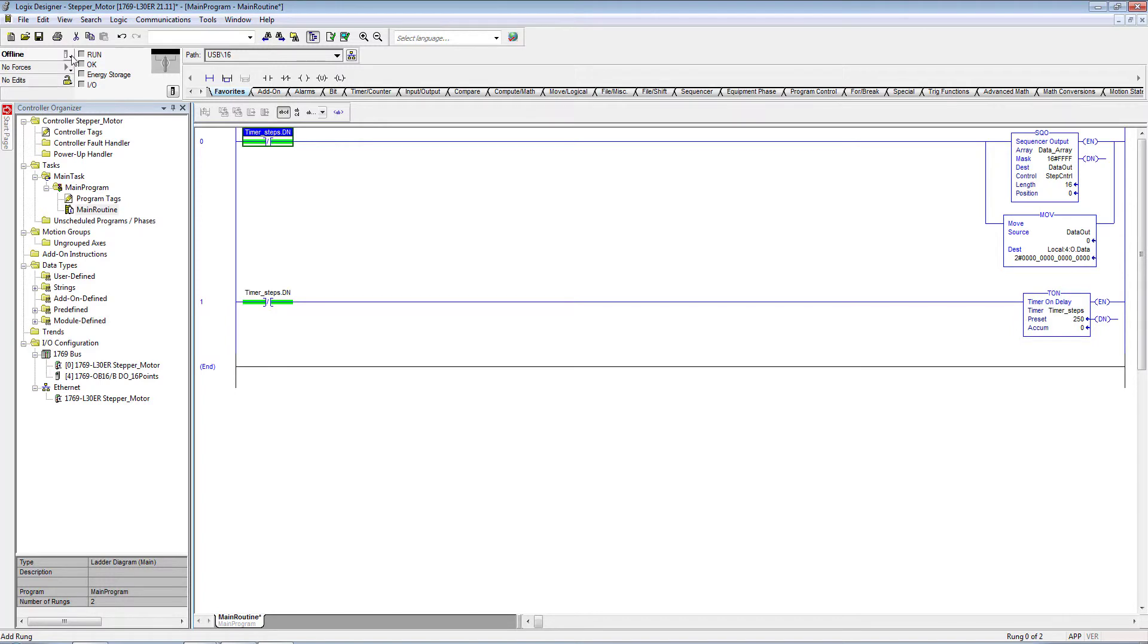That's all. Now modify the sequencer output instruction from 8 elements to 16 elements long. That's all the changes we have to make in our ladder code. Download it.